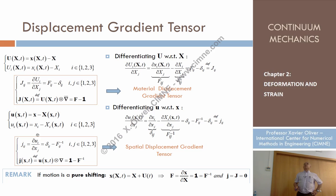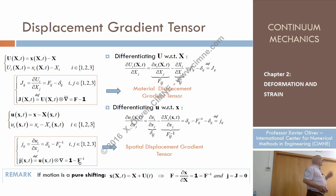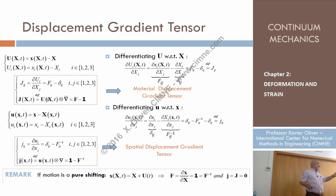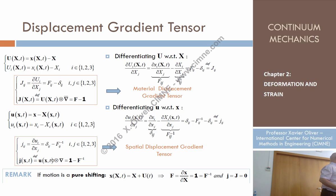So finally I arrive at: the material displacement gradient, capital J, which is F minus I; and the spatial displacement gradient, small j, which is I minus F⁻¹. They are not the same — they are different concepts. The material one describes how displacement changes when I change the material coordinates, while the spatial one describes how the same displacement changes when I change the spatial position. They are not the same physical entities.